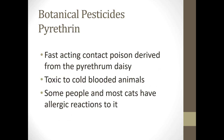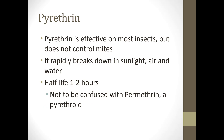Pyrethrum are fast-acting poisons derived from the pyrethrum daisy. It is toxic to cold-blooded animals, and some people and most cats have allergic reactions to it. It's effective on most insects but does not control mites. It breaks down fairly quickly in sunlight, air, and water, with a half-life of one to two hours. It is not to be confused with permethrin, which is a pyrethroid — a synthetic product with a much longer half-life.